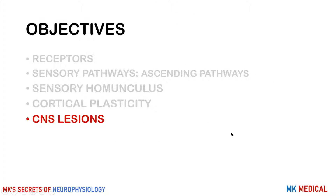In our previous review lectures, we covered aspects on receptors and neurons. We also looked at the sensory pathways, predominantly the ascending pathways. We looked at the sensory homunculus and we looked at the phenomenon of corticoplasticity. In this last review lecture video on the somatosensory system, we shall look at some CNS lesions.